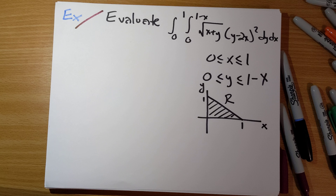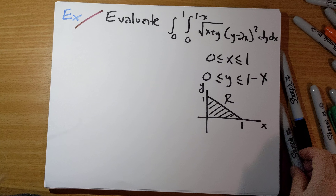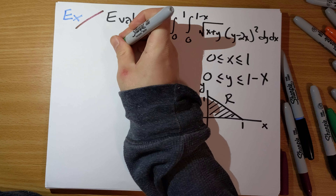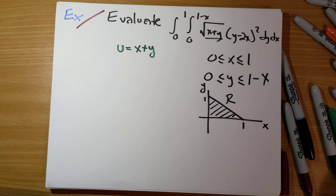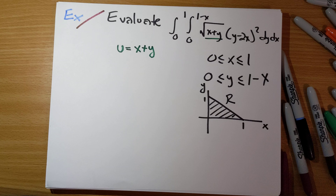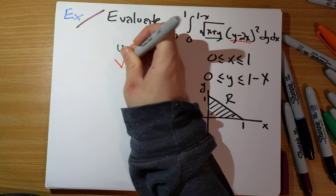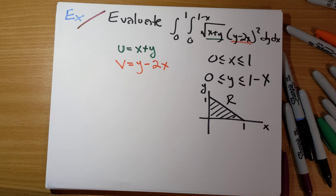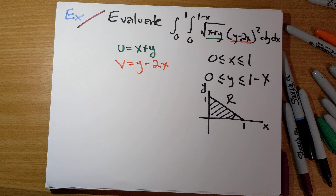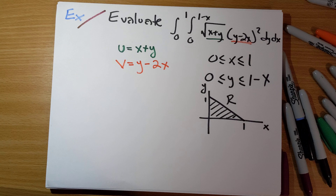So what do we try here? We have a square root of x plus y, so let's try u equals x plus y. And then we have a (y minus 2x) quantity squared, so let's try v equals y minus 2x. We now have u in terms of x and y, and v in terms of x and y. This will make our integrand really, really nice.